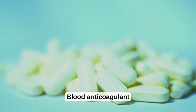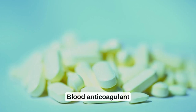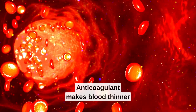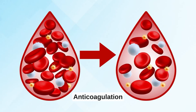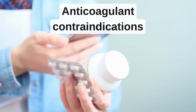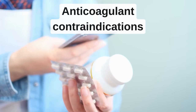Therefore we need to give something called anticoagulation — we anticoagulate the blood to make it thinner so it will not create a thrombosis as easily. Before we start anticoagulation, it's very important that we look at some contraindications. Contraindications means we are against giving anticoagulation in certain cases.